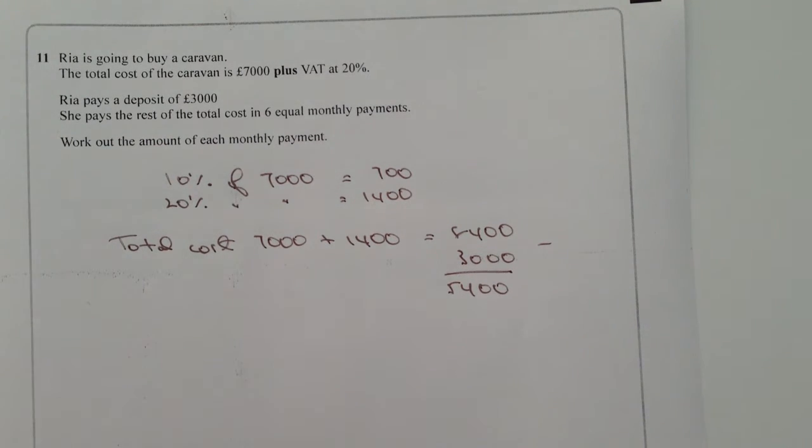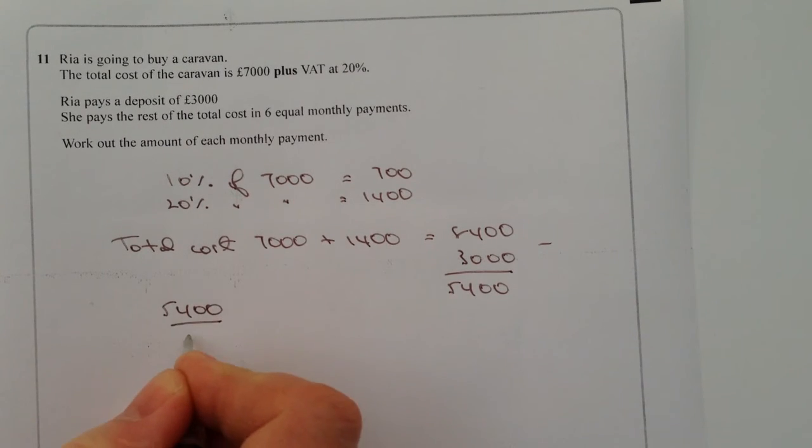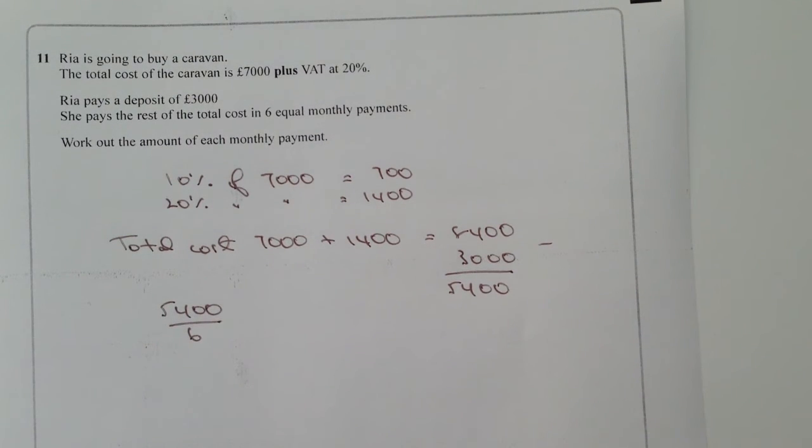So really, the question boils down to £5,400 divided by six, six monthly payments. And if you work that through, six into 54 is nine, so that would be nine, zero, zero.